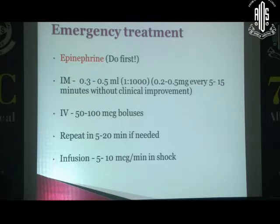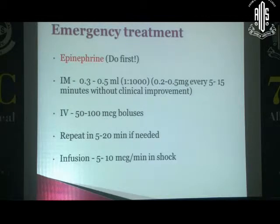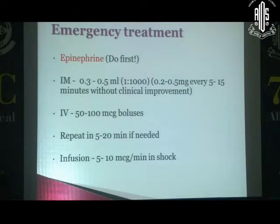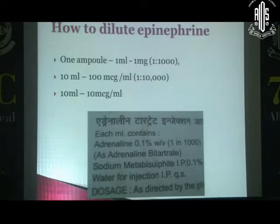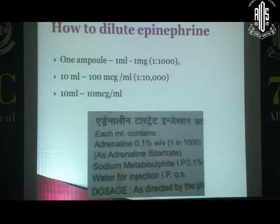Give 0.3 to 0.5 ml of adrenaline 1 in 1000 intramuscularly. You can repeat if there is no clinical improvement. If IV access is available, give 50 to 100 microgram IV boluses, repeated in 5 to 20 minutes if needed. To prepare the IV dose: one ampoule contains 1 ml of adrenaline (1 mg, 1 in 1000). Dilute that 1 ml to 10 ml — this gives 100 microgram per ml. Dilute again 1 ml to 10 ml to get 10 microgram per ml. For the 50–100 microgram IV dose, take 1 ampoule, make it 10 ml, and give 1 ml IV. Also put the patient on monitors.